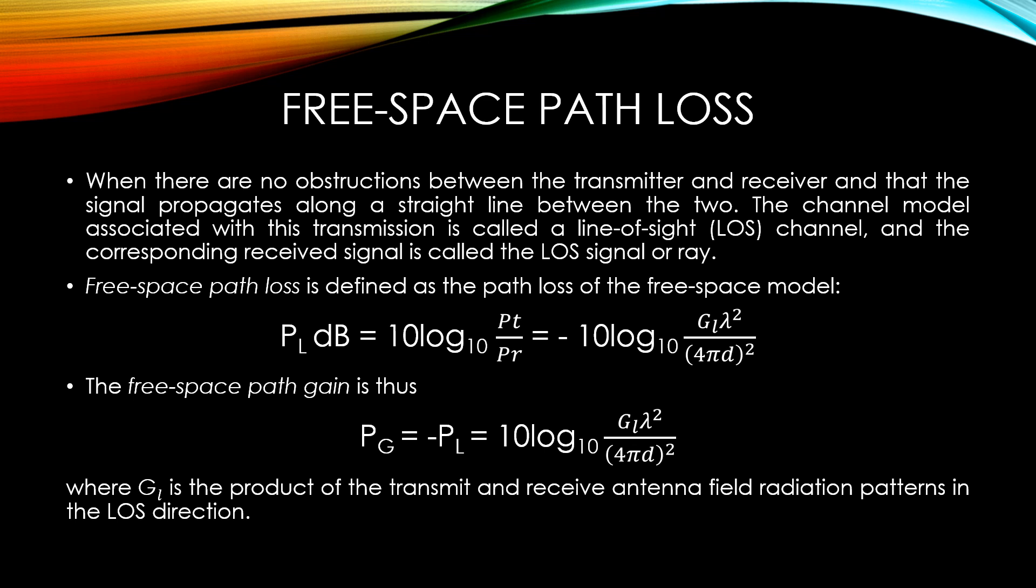Free space path loss is defined as the path loss of the free space model. For example, PLdb equal to 10 log 10 PT upon PR equal to minus 10 log 10 GL λ² upon 4πd². Where d is the distance that the wave travels. And the free space path gain is thus given by PG equal to minus PL equal to 10 log 10 GL λ² upon 4πd². Where GL is the product of the transmit and receive antenna field radiation patterns in the LOS direction.